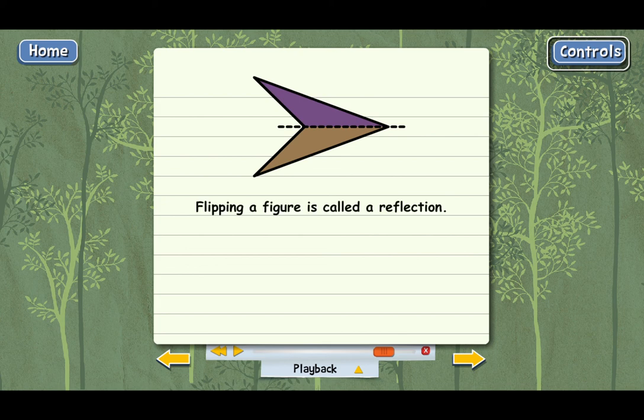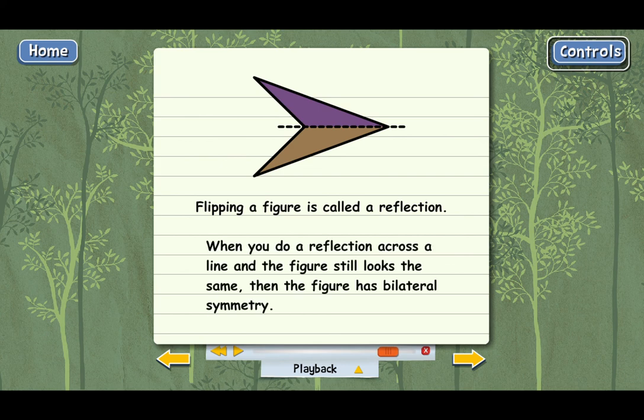When you flip a figure like this, it's actually called a reflection. We did a reflection of this figure across the horizontal line of symmetry. But when you do a reflection and when the figure looks exactly the same afterward, then you know that the figure has bilateral symmetry. That's the technical way of determining if something has bilateral symmetry.